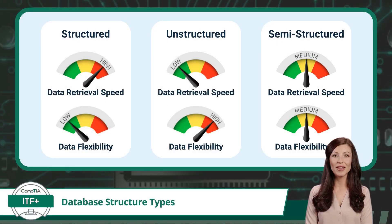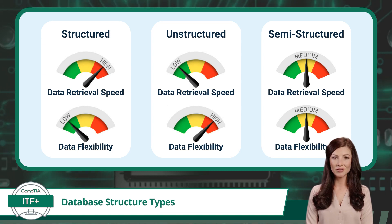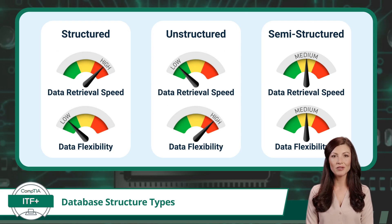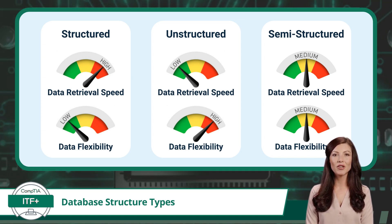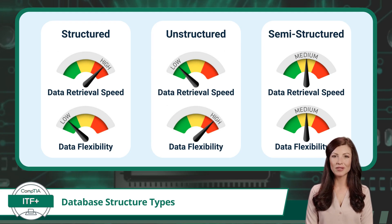Between these different database structure types, there is a distinct trade-off between data retrieval speeds when performing a query, and the rigidity or flexibility in the types of data that can be stored. Structured data typically allows for faster data retrieval speeds because fixed tables enable a database system to know the exact structure of the data. Unstructured data often has the slowest retrieval speeds, since there is no predefined structure and searching requires more extensive processing. Semi-structured data falls in the middle and offers a more balanced solution.